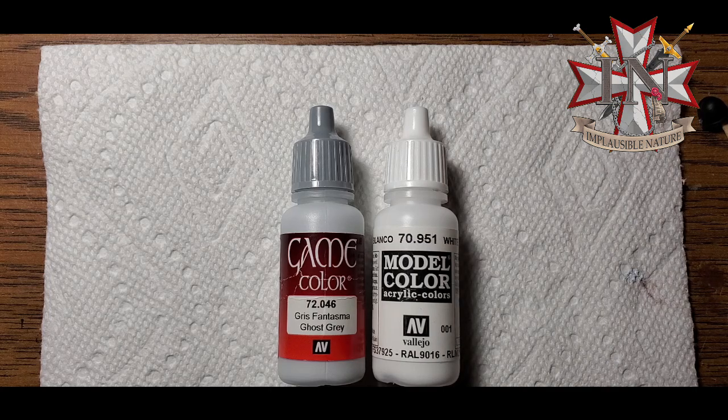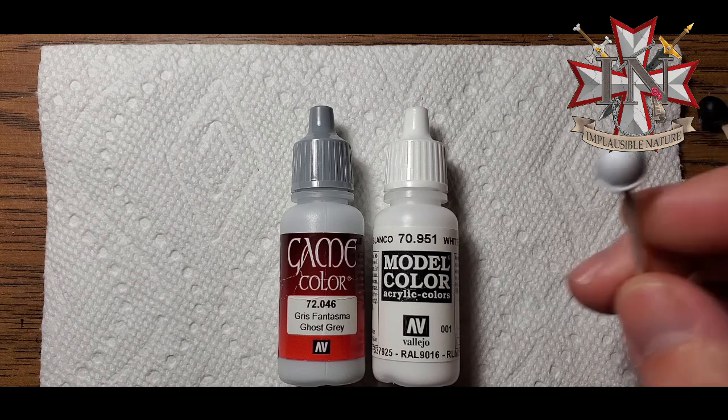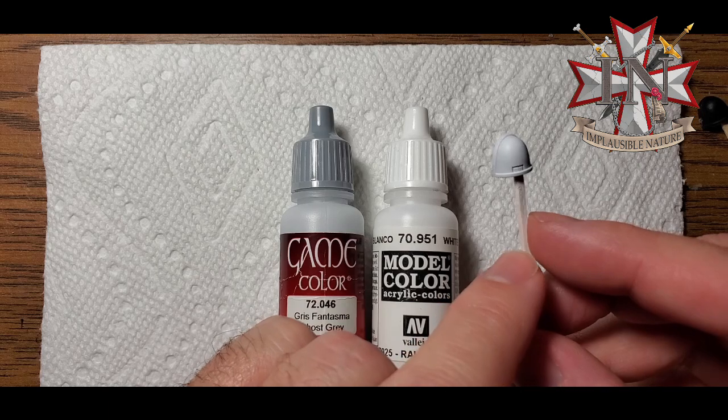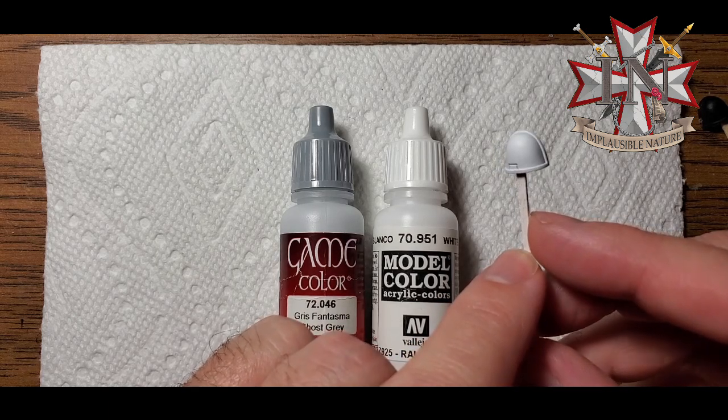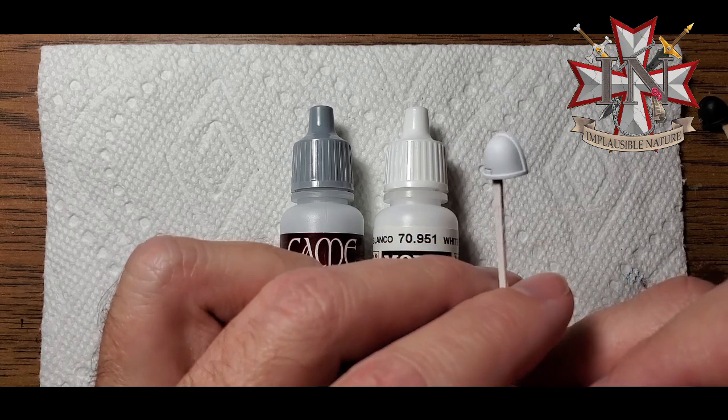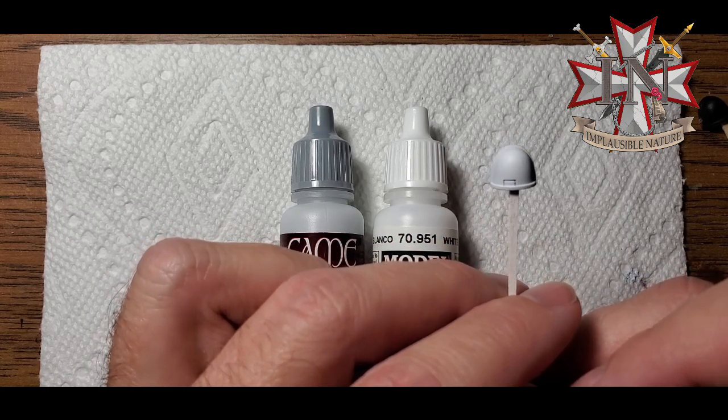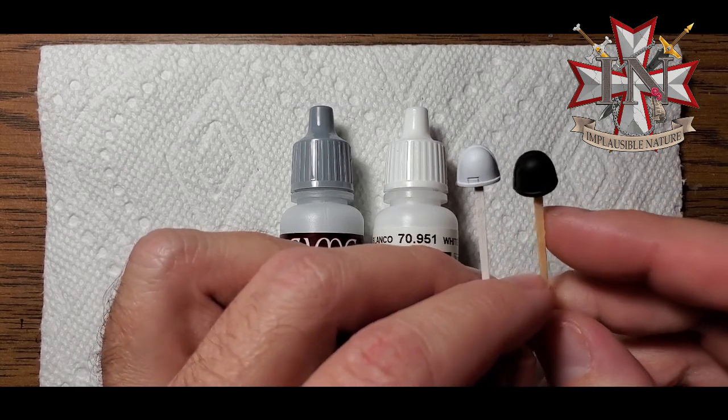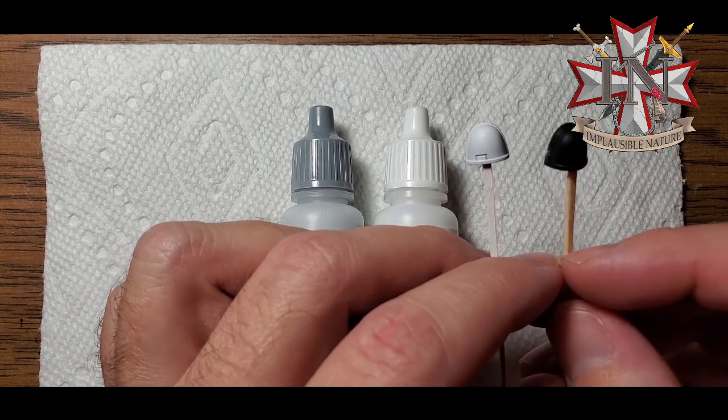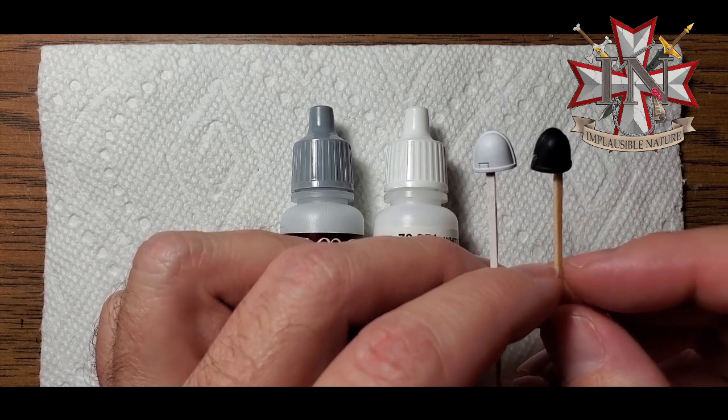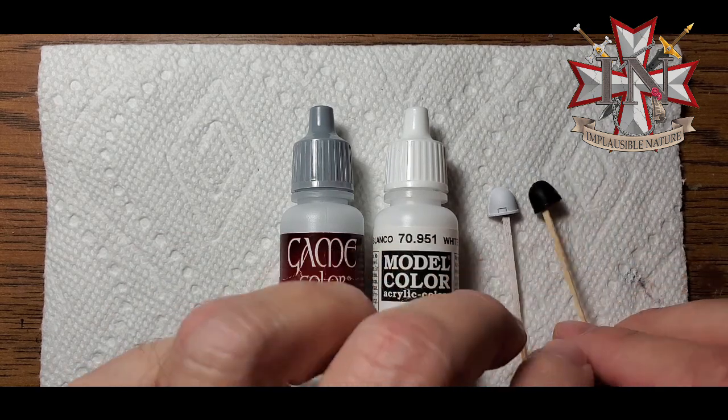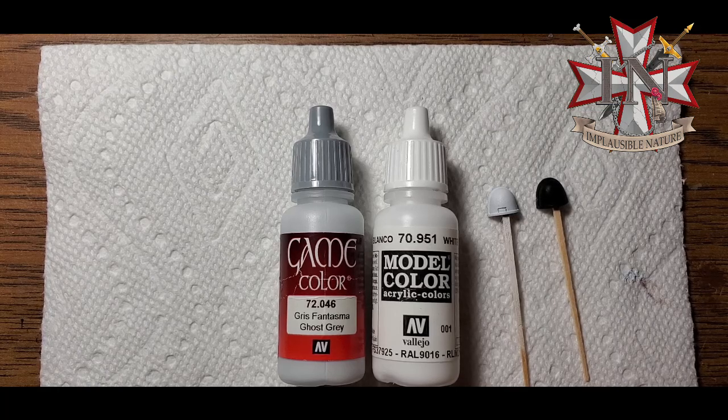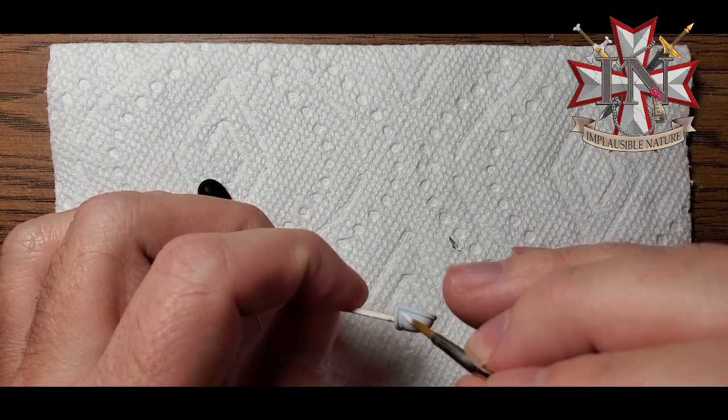Ideally you're going to want to base coat white. I know that sounds really simple, but that's the ideal way to do it. It'll just make it easier—you'll need less coats. But I know sometimes it's not possible to base coat the shoulder pad separately, looking at you Dark Imperium Intercessors, so we'll do it with black too and you'll be able to see how to do that as well. We're going to get started here.